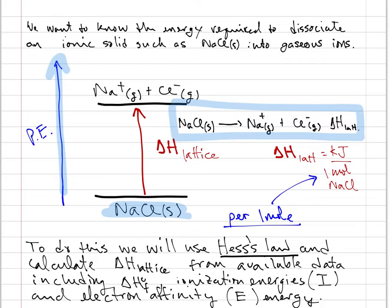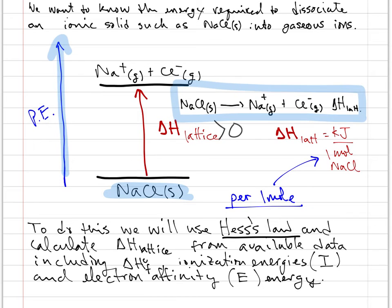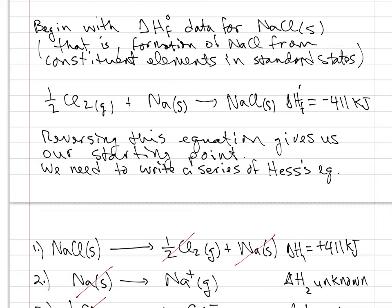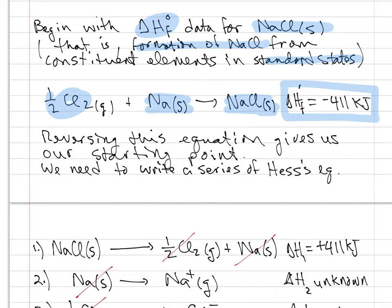This is an endothermic process and delta H is greater than zero. We'll calculate delta H lattice using Hess's law and delta H of formation as well as ionization and electron affinity data. Let's begin with the delta H of formation for sodium chloride itself — that is the formation of sodium chloride from its constituent elements in their standard states. This gives half a mole of chlorine gas combining with one mole of solid sodium to form sodium chloride, and the delta H of formation for this reaction is minus 411 kilojoules.